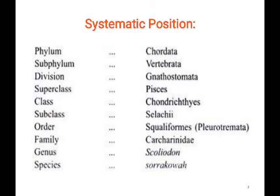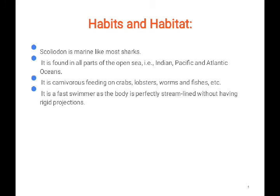The family is Triakidae and the genus is Scoliodon. The species taken for this example is laticaudus, though more than three to four thousand species of shark are present. Regarding habit and habitat, most sharks are marine, found in all parts of the open sea — the Indian, Pacific, and Atlantic Oceans. It is carnivorous, feeding on crabs, lobsters, worms, and fishes. It is the fastest swimmer as the body is perfectly streamlined without any rigid projection.